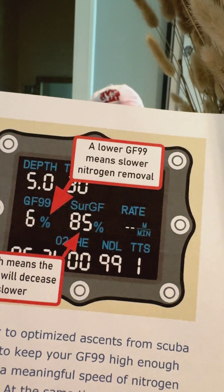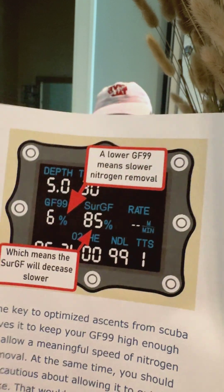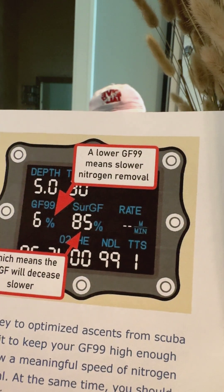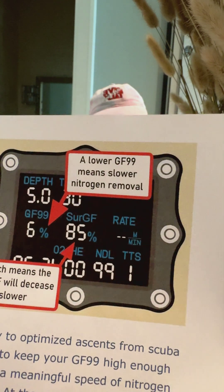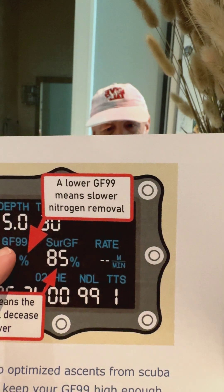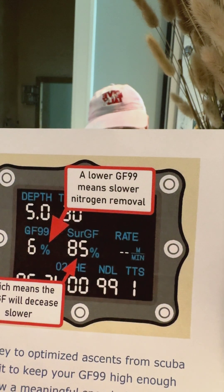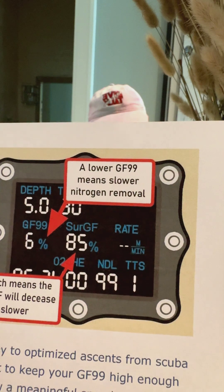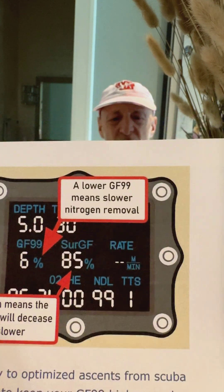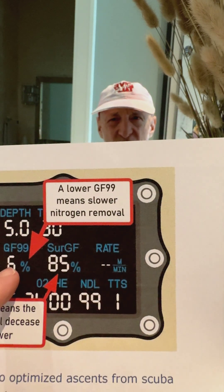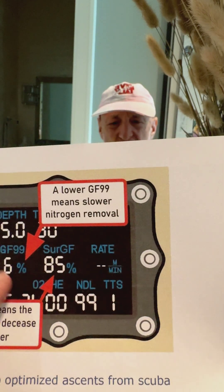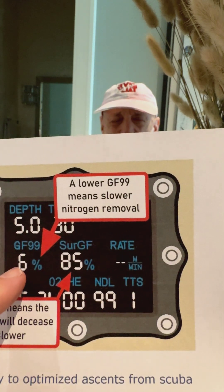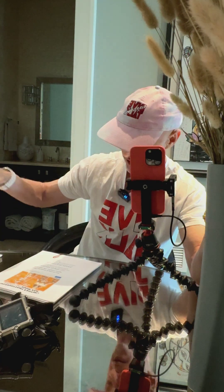We don't want it to spike quickly though. You should be cautious about allowing GF99 to quickly spike — that would provoke microbubble formation and cause decompression stress. So we don't want to just move up so quickly that this spikes. Again, we don't want it to be more than about half of what your high gradient factor is set to.